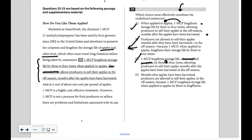So months after the apples have been harvested, producers are allowed to sell their apples in the off-season. This off-season belongs to the months after the apples. They've kind of broken it up, they've increased the redundancies, and they also moved everything around.